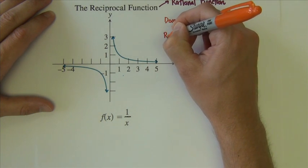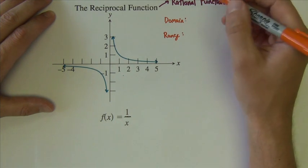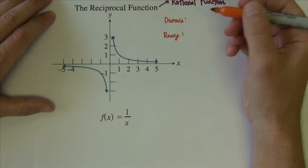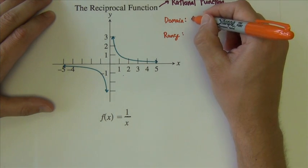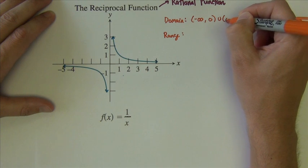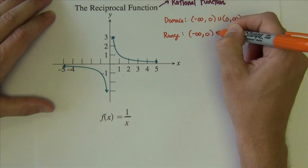Now, some characteristics about this reciprocal or rational function. Its domain and range—well, this one is finally the first one we see that is not a continuous function. So its domain and range are going to reflect that: negative infinity to zero, zero to infinity are both of them.